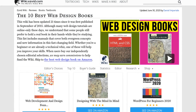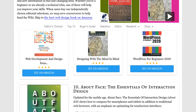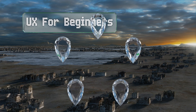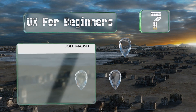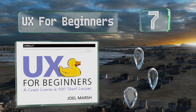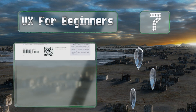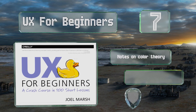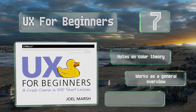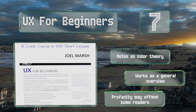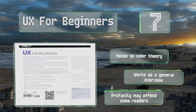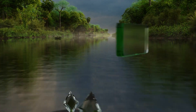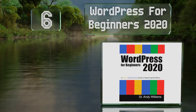At number seven, 'UX for Beginners: A Crash Course in 100 Short Lessons' covers the conceptual and practical fundamentals of creating an effective and streamlined user experience, and it's infused with a sense of humor throughout to keep you engaged. It includes notes on color theory and works as a general overview, but some of the profanity may offend some readers.